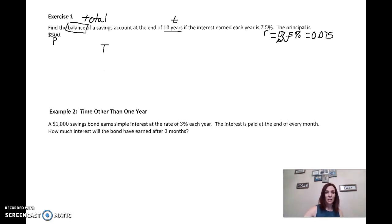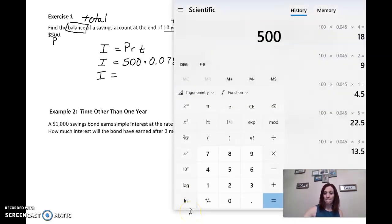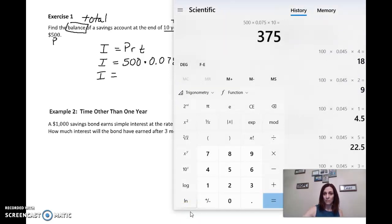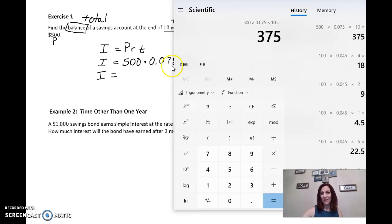So if you have our formula, interest equals principal times rate times time. Interest equals our principal, $500 times our rate, 0.075 times our time, which is 10 years. So our interest is going to be equal to $375.